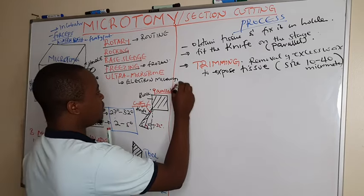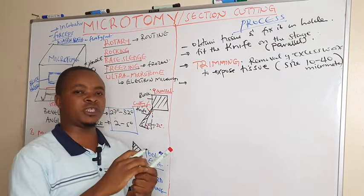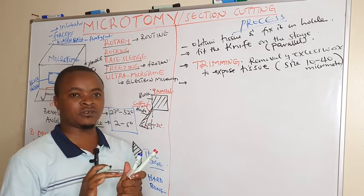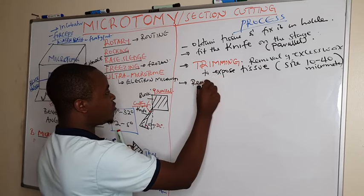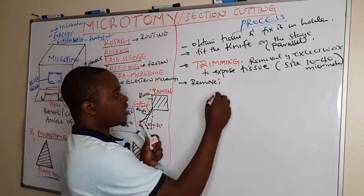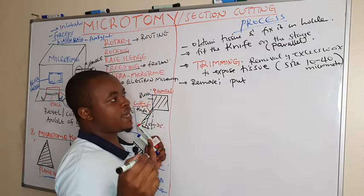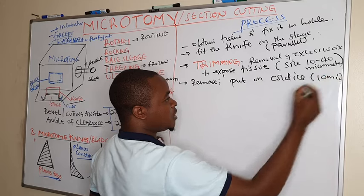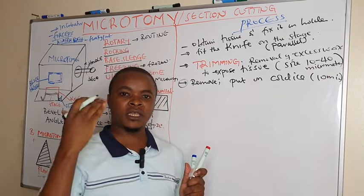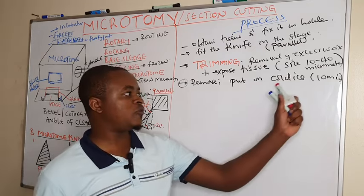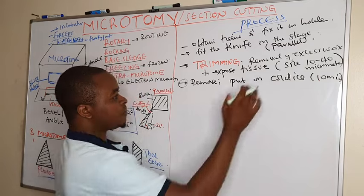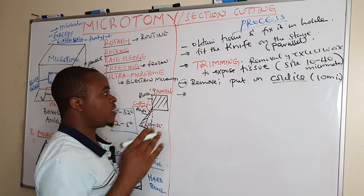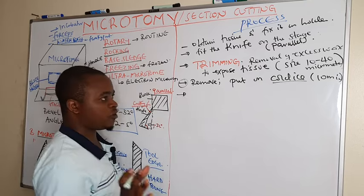After trimming, you remove the block from the holder because trimming causes the surface to heat up, creating inconsistency between the paraffin wax and the tissue. You put the trimmed embedded tissue in cold ice for at least 10 minutes to enable cooling. This step is optional, but it enables easy sectioning to obtain good ribbons.